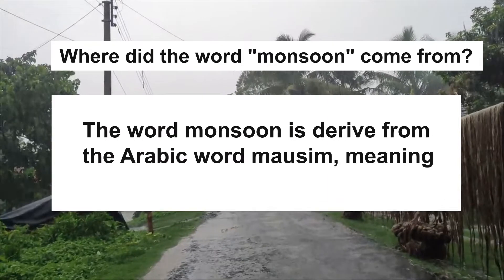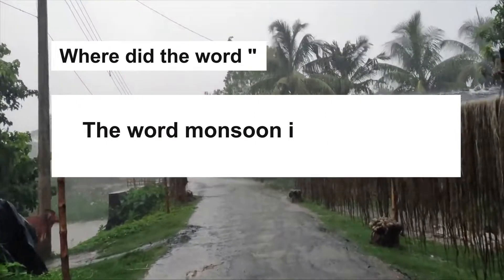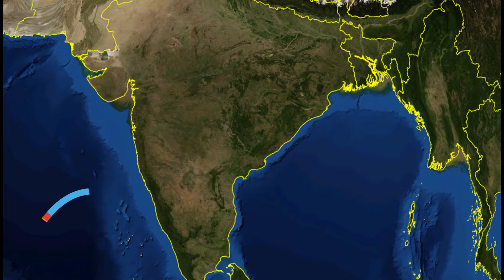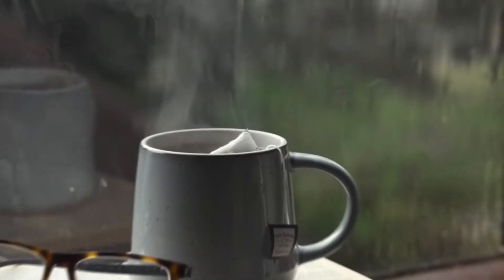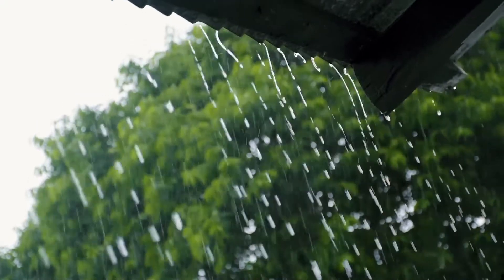Have you ever wondered where the word monsoon came from? The word monsoon is derived from the Arabic word 'mossims,' meaning seasons. The term refers to the winds blowing from the Arabian Sea, which blow from north to east for 6 months. Because of this, the winds blow for 6 months from sea to land and then for the next 6 months from land to sea.